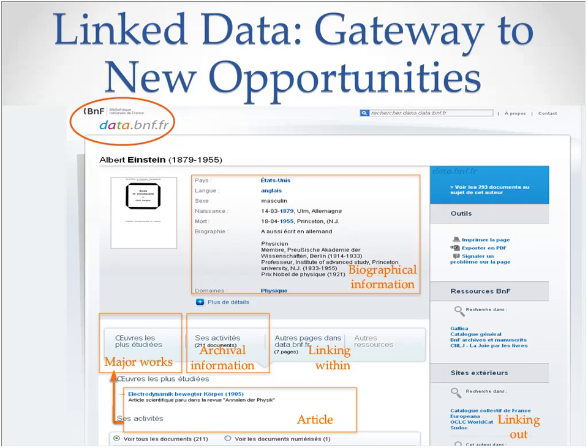Users can expand their search by linking to digital libraries that have partnerships with BNF, such as Europeana, OCLC, and Sudoc — a catalog for all research libraries in France. The site has an open license, which allows anyone to continue building and linking out to relevant information on the web. Assessment has shown improved ranking of BNF pages in Google, which facilitates making unique collections more visible and findable to users.